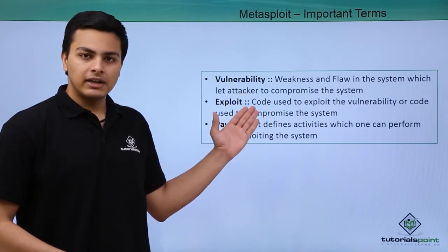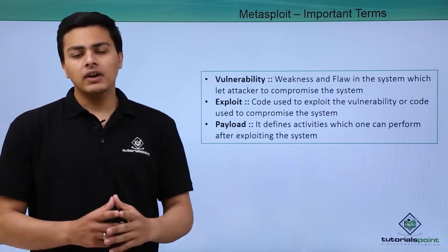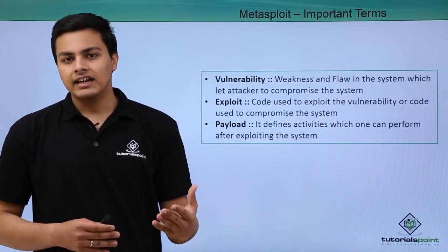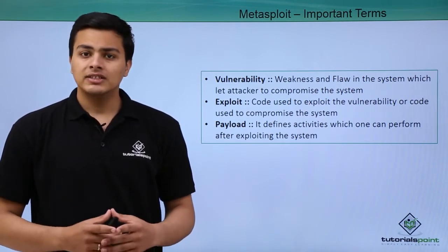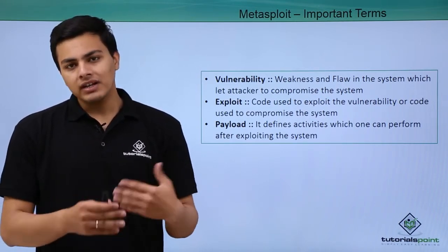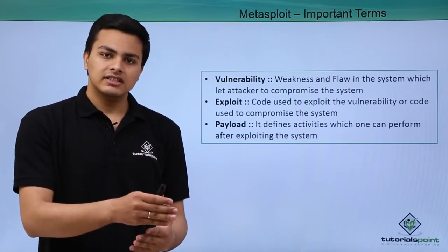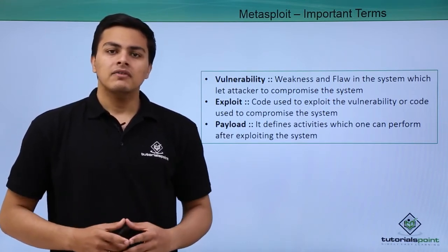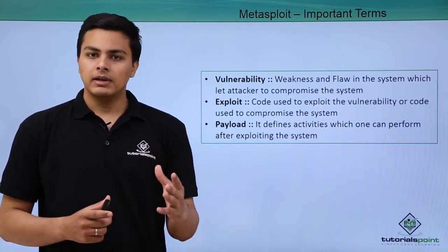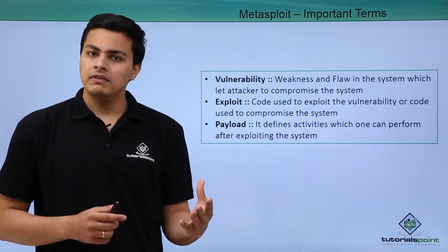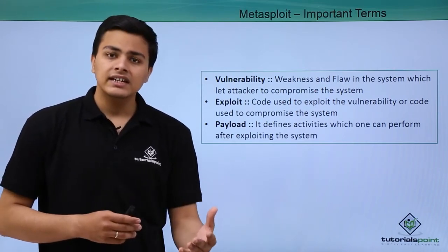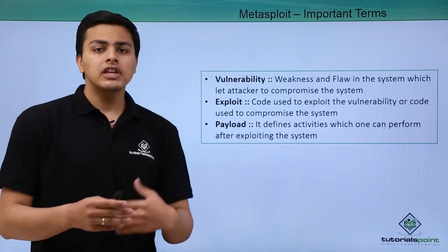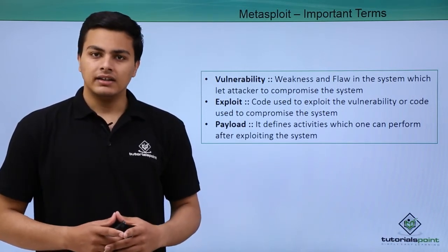The important terms are vulnerability, exploit, and payload. A vulnerability is a flaw or weakness in a system that allows an attacker to compromise it. An exploit is the code an attacker uses to exploit that vulnerability and gain access to the system. A payload is defined as the activities one can perform once inside a system — for example, after finding a vulnerability and using code to exploit it, what actions you can perform inside the system defines the payload.